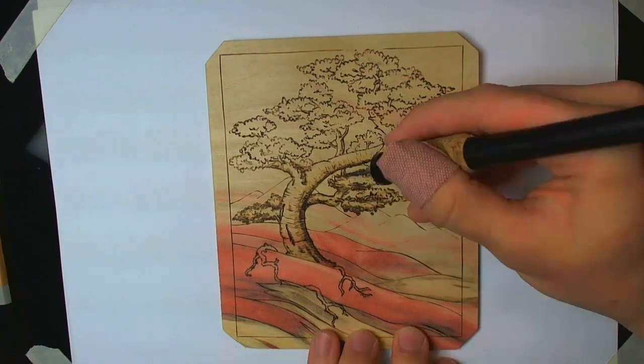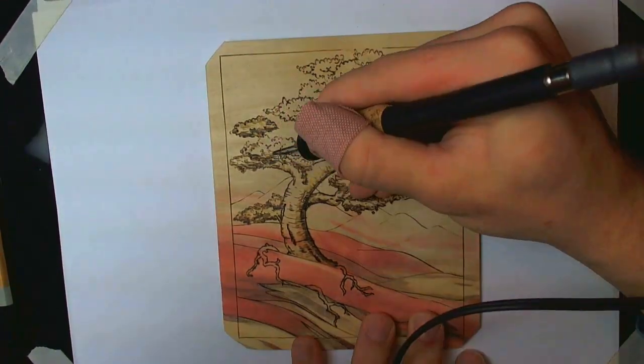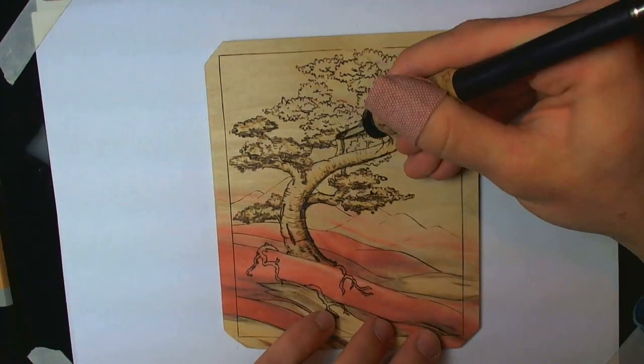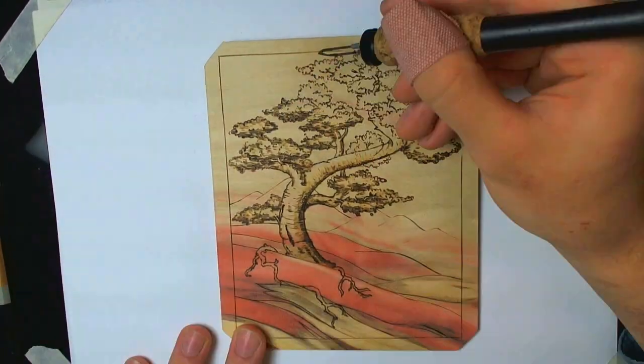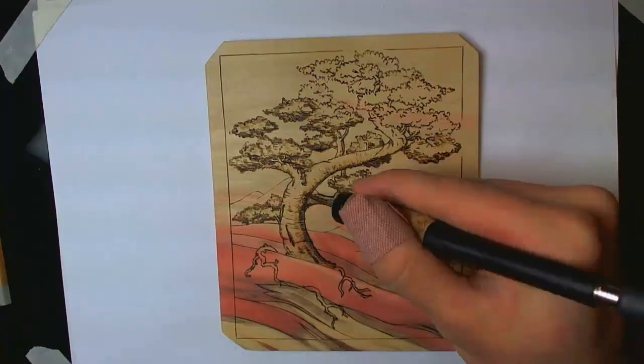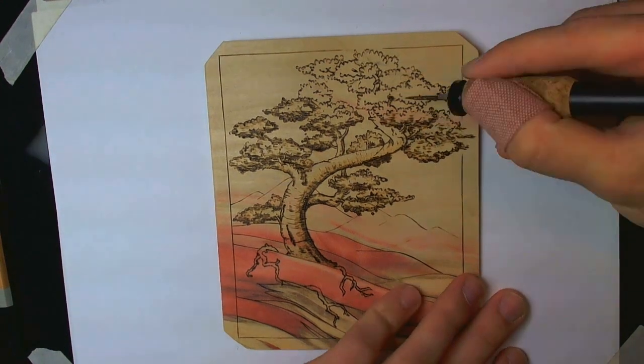Then I moved on to a couple of different blade tips for the rest of the drawing. The border and some of the lines for the ground beneath the tree was done with a straight blade tip, and the shading for the tree and some of the other lines were done with a curved blade.